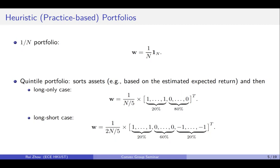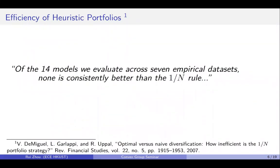The quintile portfolio is a little bit heuristic that it first sorts all the assets using the estimated expected return and then we can equally long the top 20 percent or we long the top 20 percent and short the bottom 20 percent equally. Although these heuristic portfolios are very simple, they have very good performance in finance.